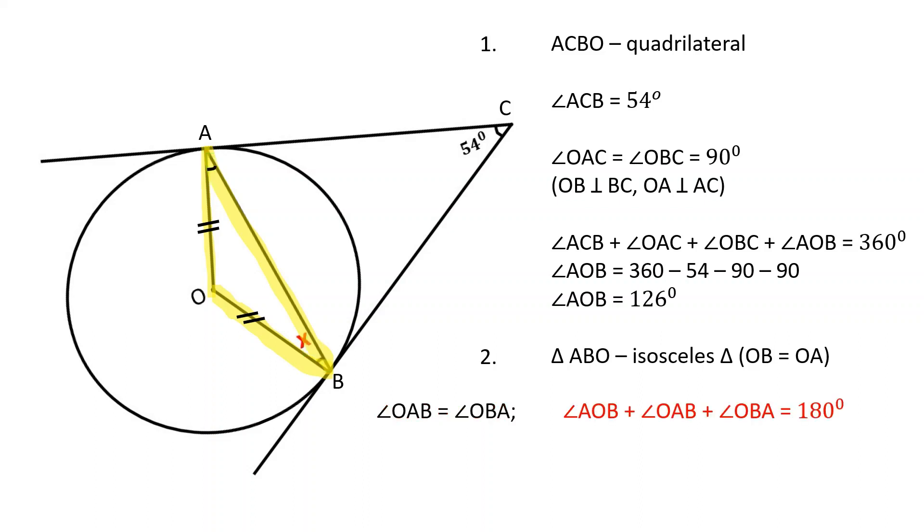And since the sum of the interior angles of a triangle is 180 degrees, angle OBA is equal to 180 minus 126 divided by 2, which is 27 degrees. And this is our answer.